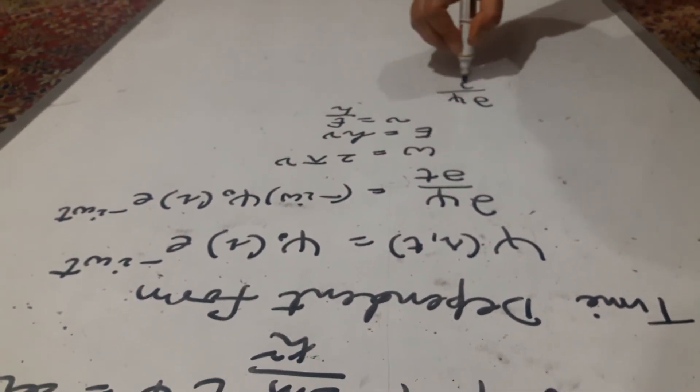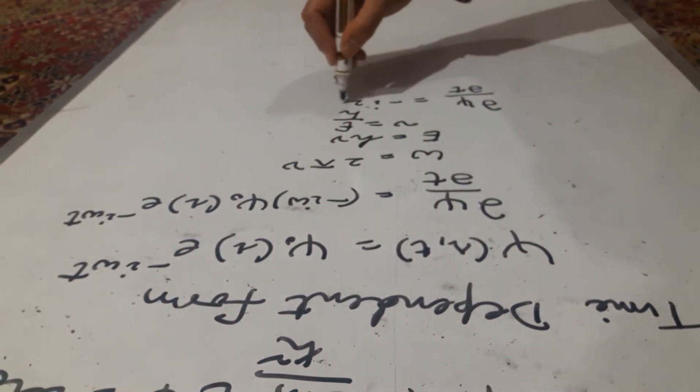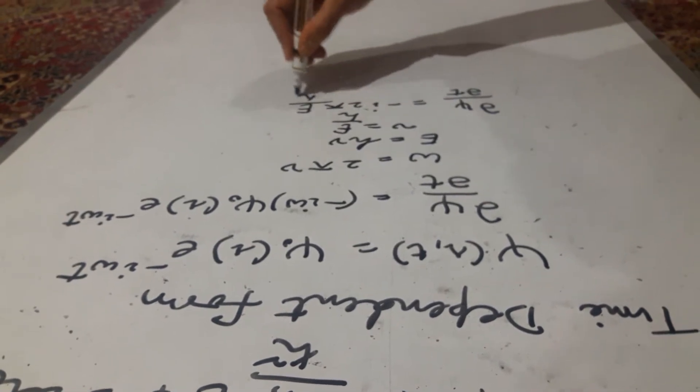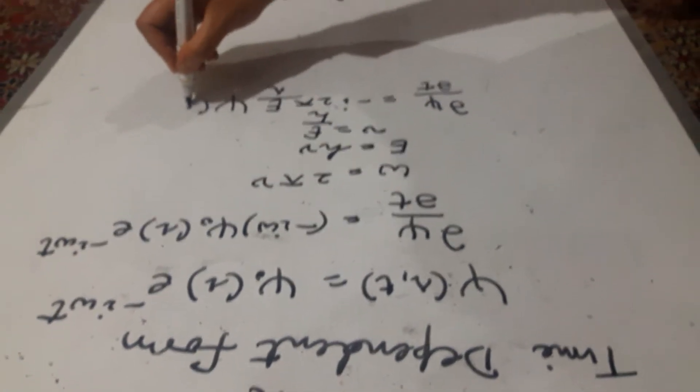Dow psi by dow t is equal to minus iota. For omega, we can write 2 pi, and for nu, we can write e by h. And for this whole, I can choose to write psi of r t.